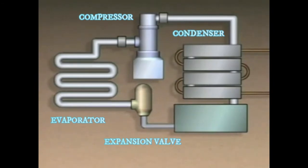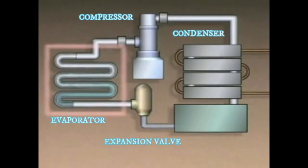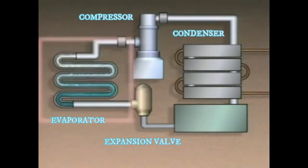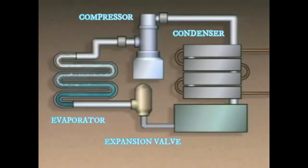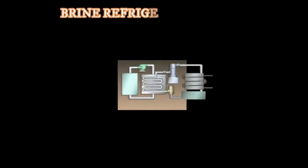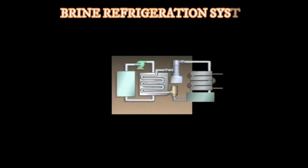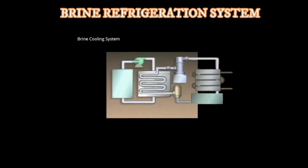The temperature drop caused by the expansion valve creates a larger temperature difference between the refrigerant and the substance being cooled, which allows more heat to be absorbed. Also, at the lower pressure, the boiling temperature of the refrigerant is lowered, meaning the refrigerant is able to vaporize at a low temperature.